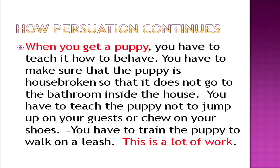Let's go through the essay and see how he continues with the persuasion. 'When you get a puppy, you have to teach it how to behave. You have to make sure that the puppy is housebroken so that it does not go to the bathroom inside the house. You have to teach the puppy not to jump up on your guests or chew your shoes. You have to train the puppy to walk on a leash. This is a lot of work.' What is remarkable is how he is talking about the inconveniences of getting a puppy, listing them out, and ending the paragraph by claiming this requires a lot of work and rigorous training.